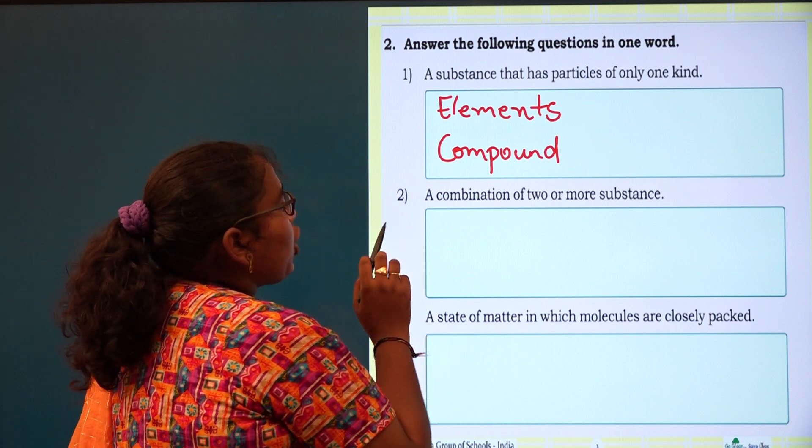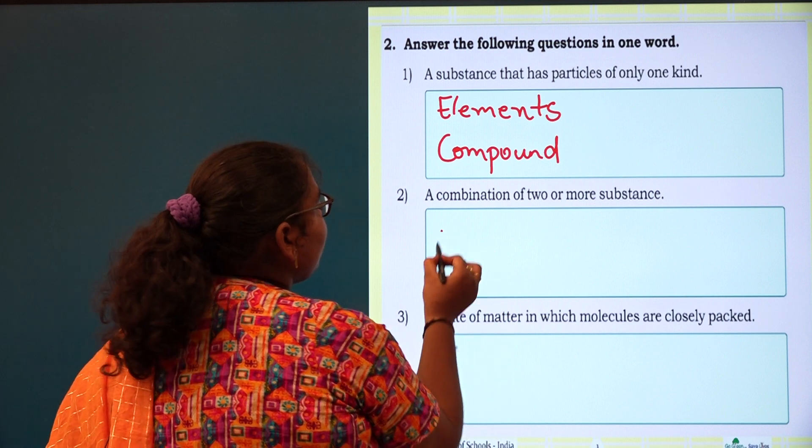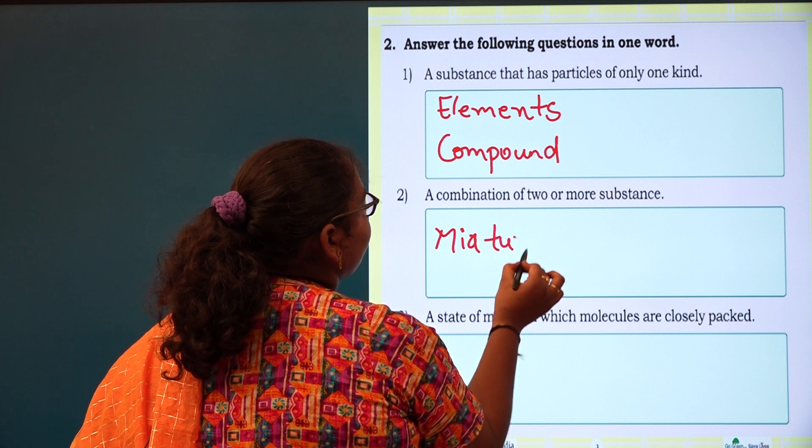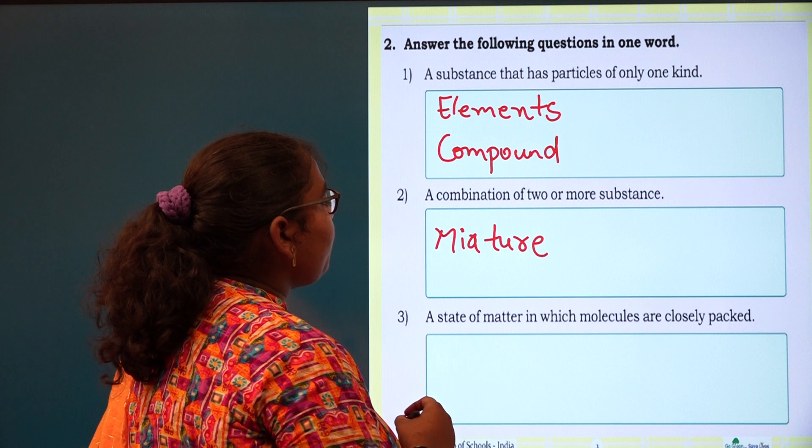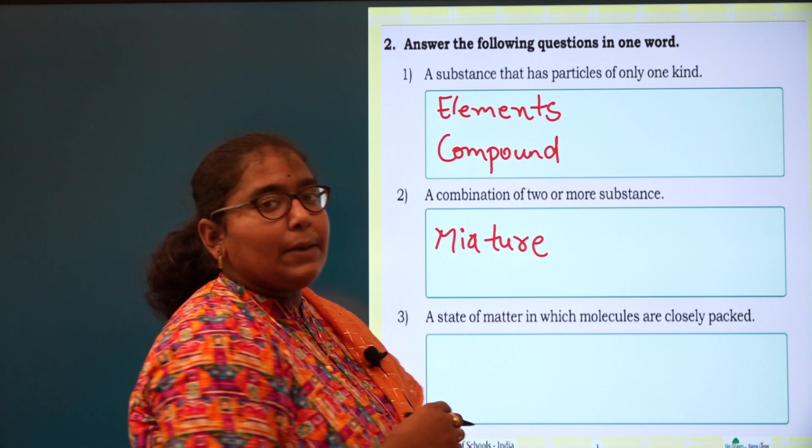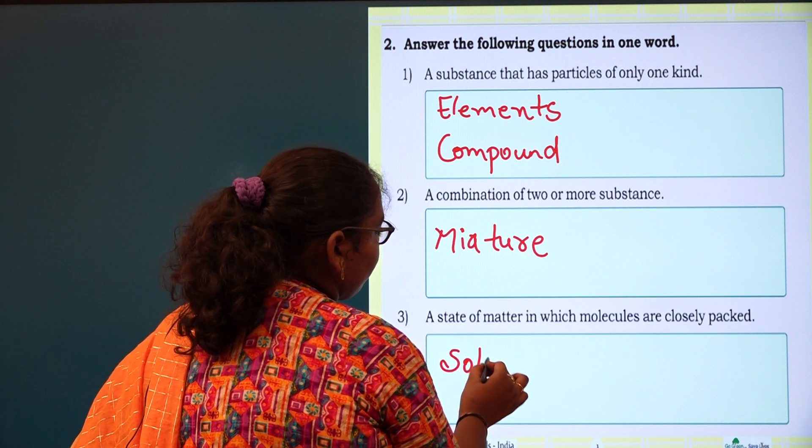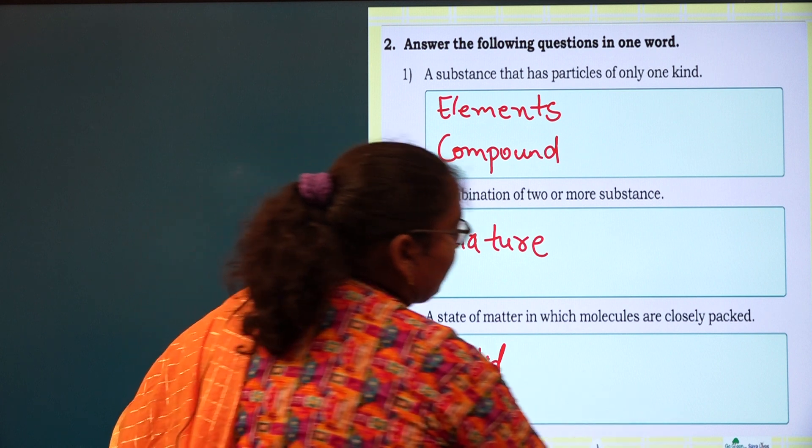Next one: a combination of two or more substances is called mixture. Third one: a state of matter in which molecules are closely packed. Which state will solve this? Solid. It has fixed shape, molecules are closely packed.